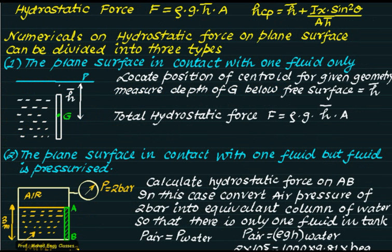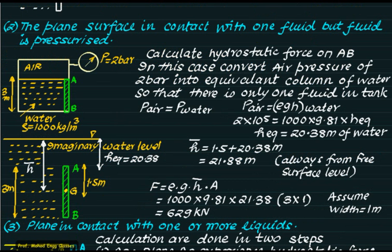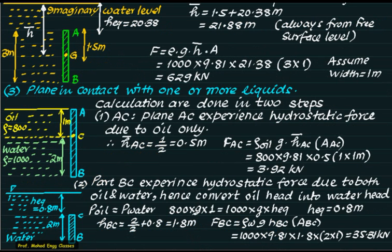In summary: for a single fluid in contact with a plane surface, locate the centroid, measure h-bar from the free surface, and use F = rho × g × h-bar × area. When a pressurized air or gas column is present, convert it to an equivalent water column, replace it with an imaginary water surface, and measure h-bar from there. When the plane is in contact with multiple liquids, calculate the force for each fluid separately, converting one fluid's head into the other's equivalent column before summing.